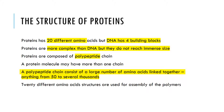Proteins have 20 different amino acids that make them, but DNA just has 4 building blocks. Proteins are more complex than DNA, but they do not reach immense sizes. Proteins are components of polypeptide chains. A protein molecule may have more than one chain. A polypeptide chain consists of a large number of amino acids linked together — anything from like 50 to several thousands.